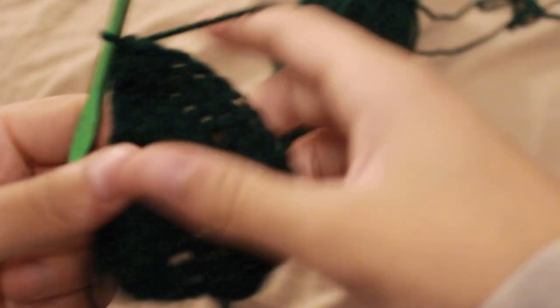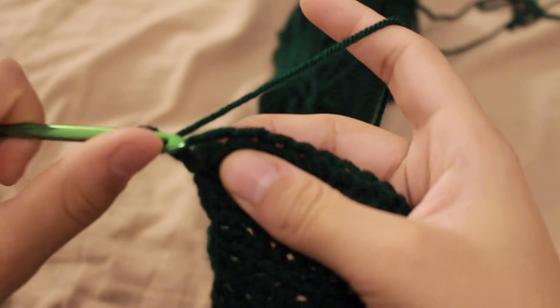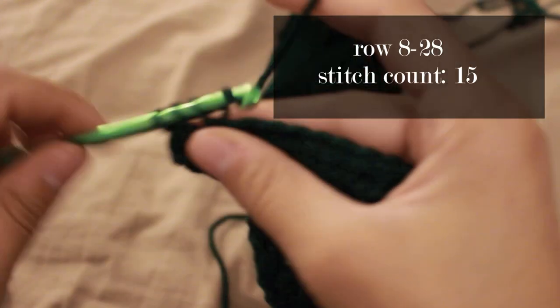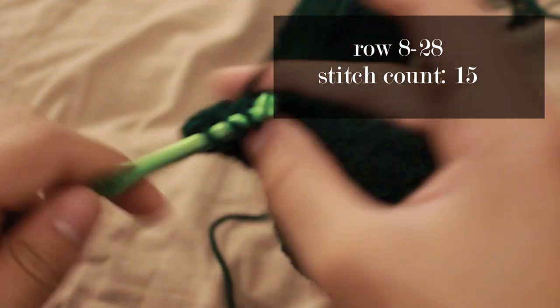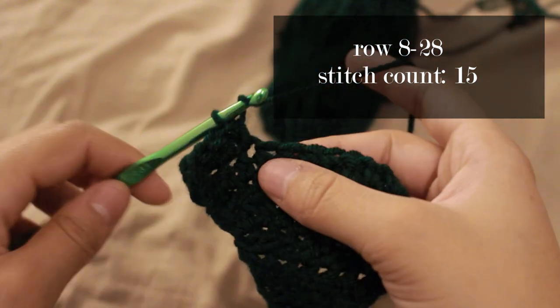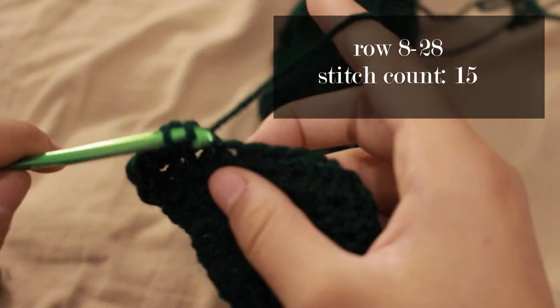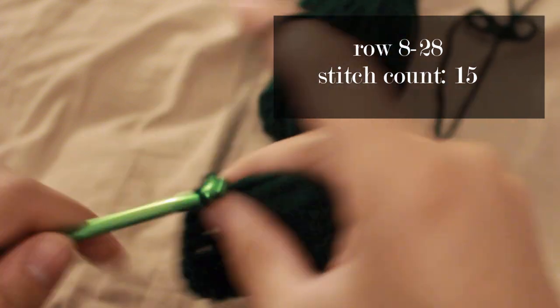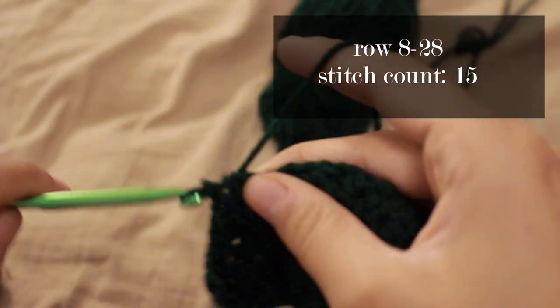Once you've done rows 1 through 7, you'll start on row 8 through 28, which the stitch count will be 15, so you'll be leaving it the same the entire time, which means you'll be doing one stitch into each space. It can also help if you put a stitch marker in, which I do a little bit later here once I get past row 10.